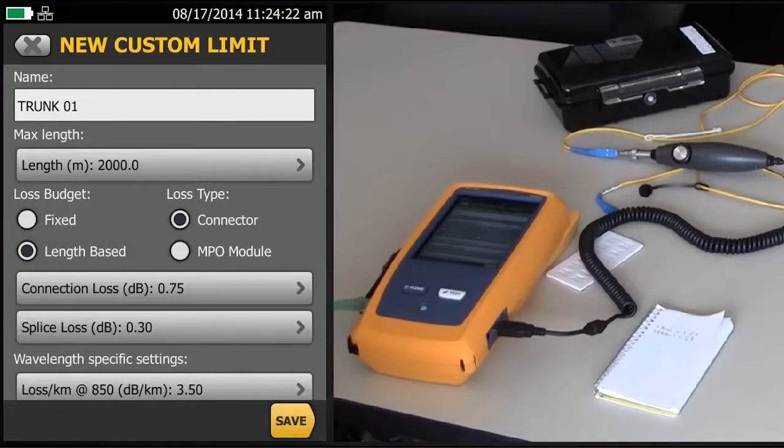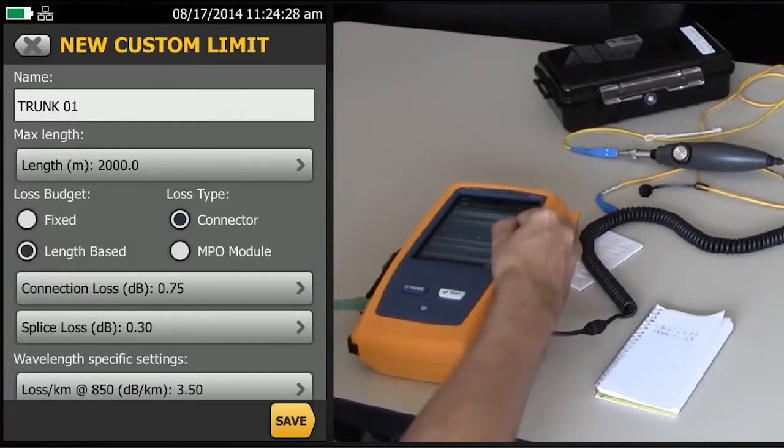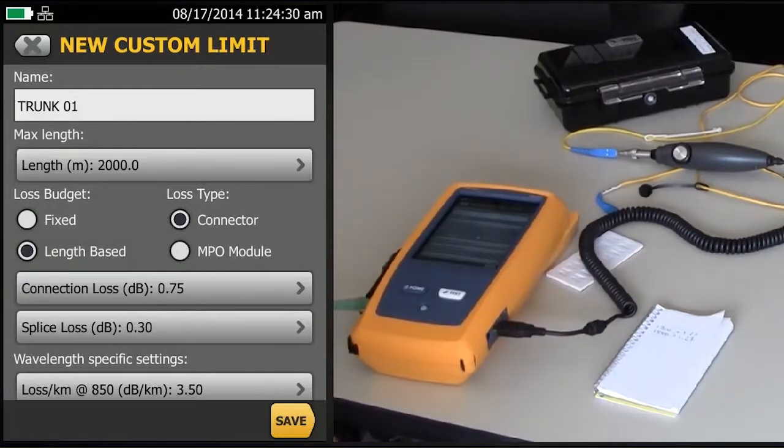Now, when you look at this, you'll notice under Loss Budget there's two flavors. One is fixed and one is length-based. The length-based customization allows you to take the default 0.75 dB allowed for a mated pair and change it to half a dB or 0.35 or whatever your consultant or end user or, indeed, cabling vendor says.